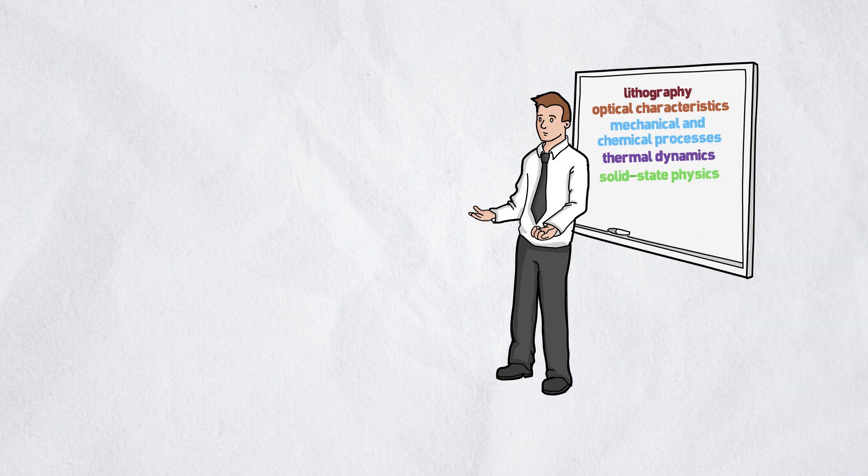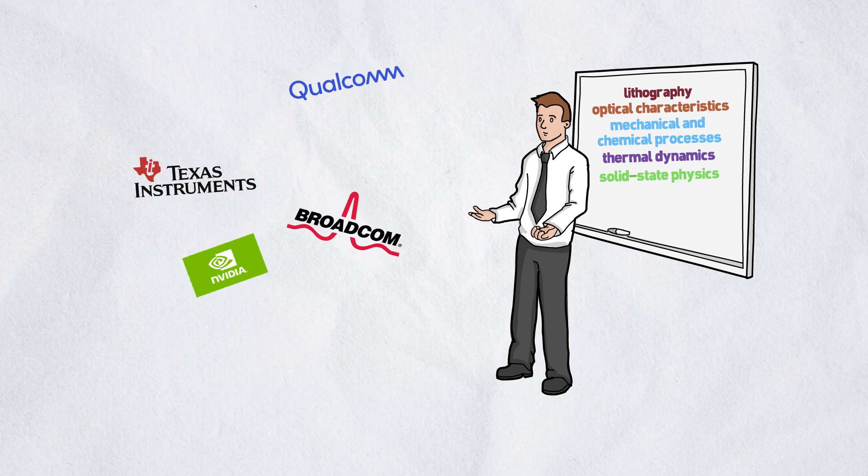Companies have specialized in different areas, leading to the dominance of large product companies like NVIDIA, Broadcom, Qualcomm, Texas Instruments, Micron, and Samsung.